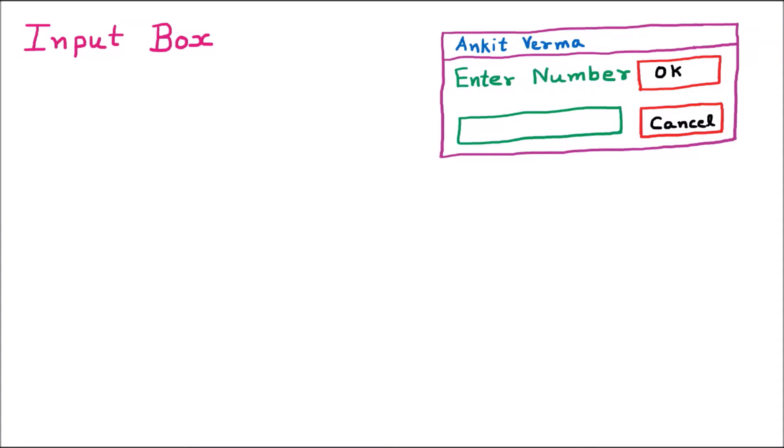We are now learning the InputBox. InputBox is a predefined function in .NET. There are two predefined functions which are mostly used: the first is the MessageBox function and the second is the InputBox function. When we want to display a message to the user we use MessageBox. Whenever we want to take input from the user we use the InputBox function, which displays a message box where the user can enter a value.